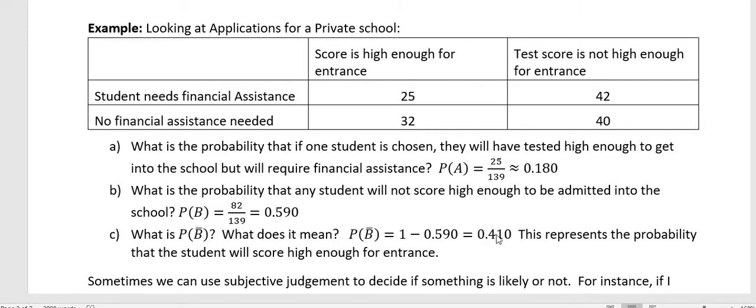This is the probability of the complement of B. What this represents is the probability that the student will score high enough for entrance, because B was 'they did not score high enough.' So the complement of that would be that they did score high enough to get in.